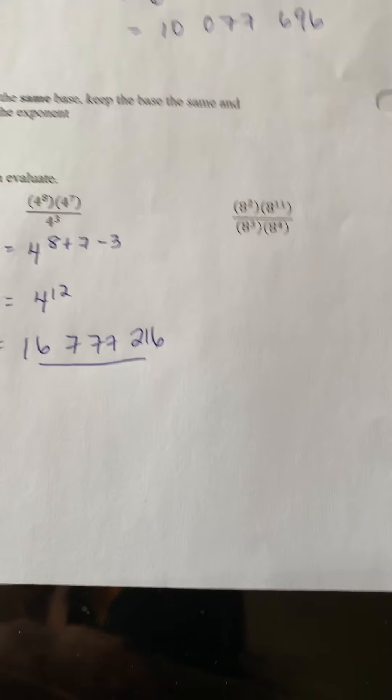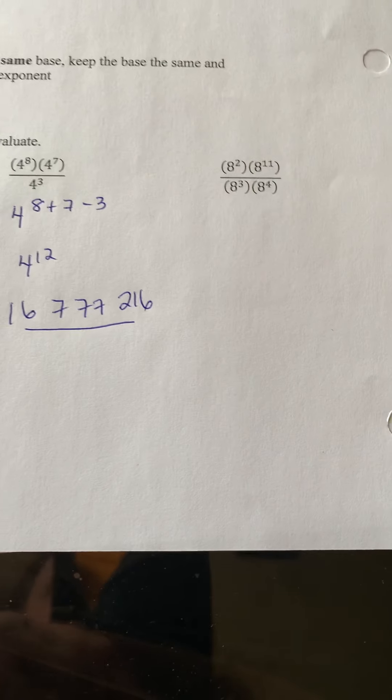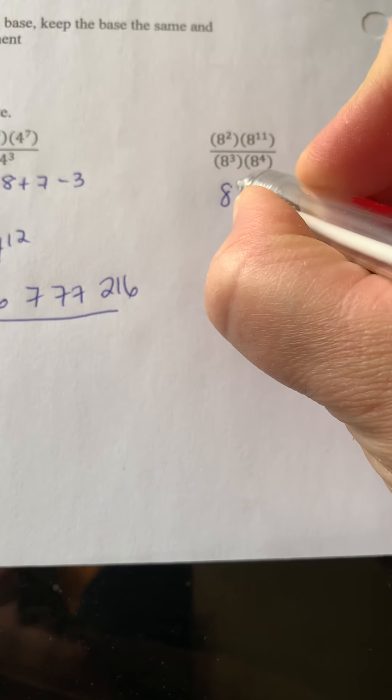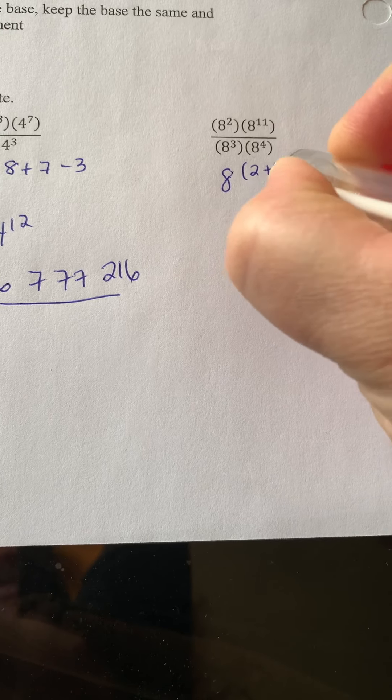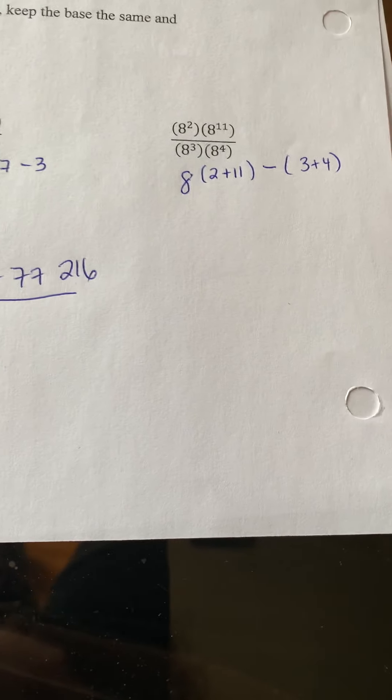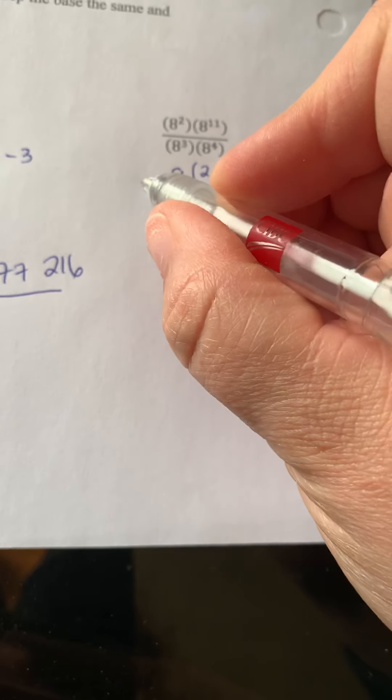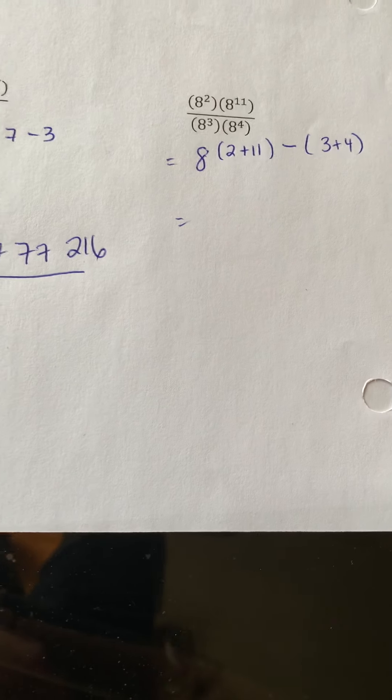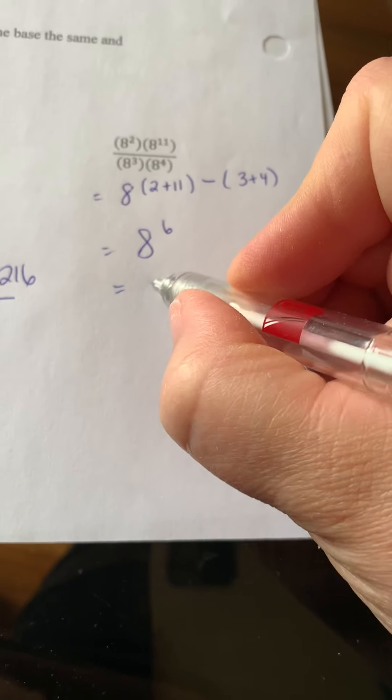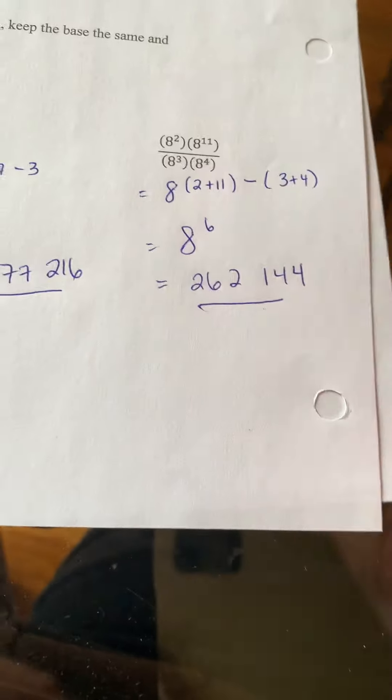Here we go. Last example for quotient rule. We're looking at multiplication and division all in one. So we're talking 8 to the power of 2 plus 11 minus 3 plus 4. So be mindful. We're keeping the brackets where they need to be. So we end up 2 plus 11 is 13 minus 7. So we're talking 8 to the power of 6, and we're looking at 262,144.